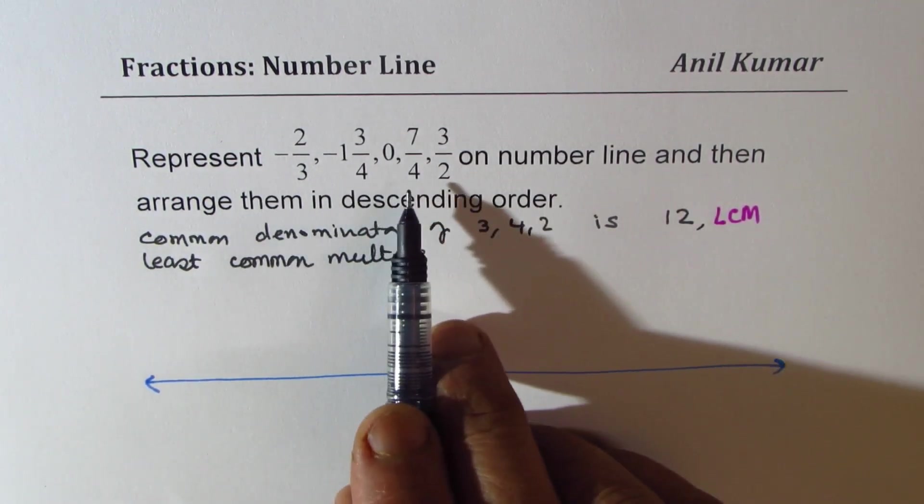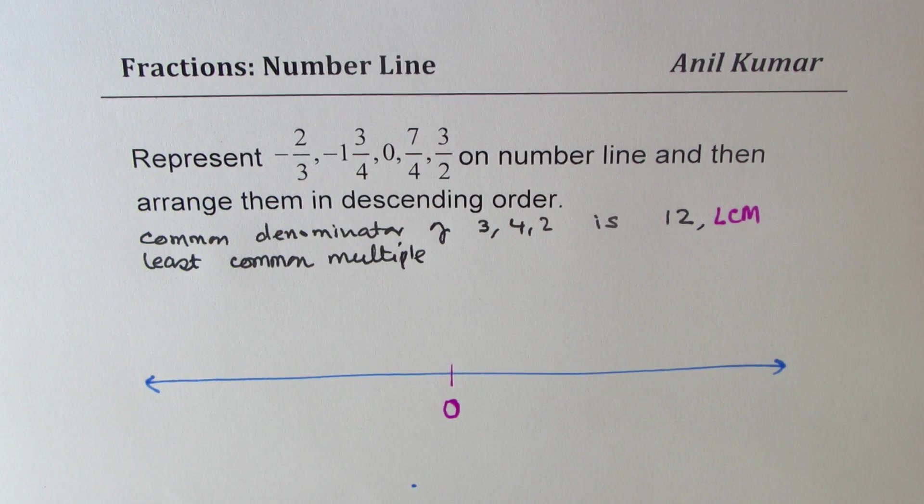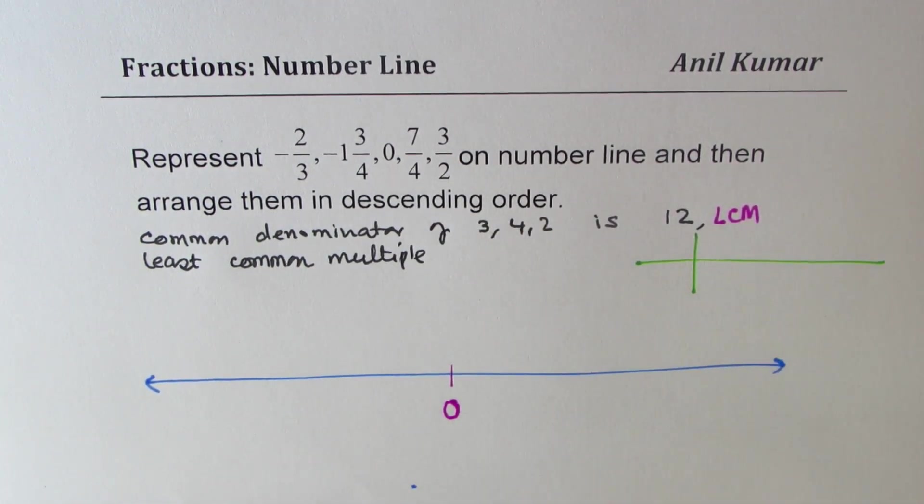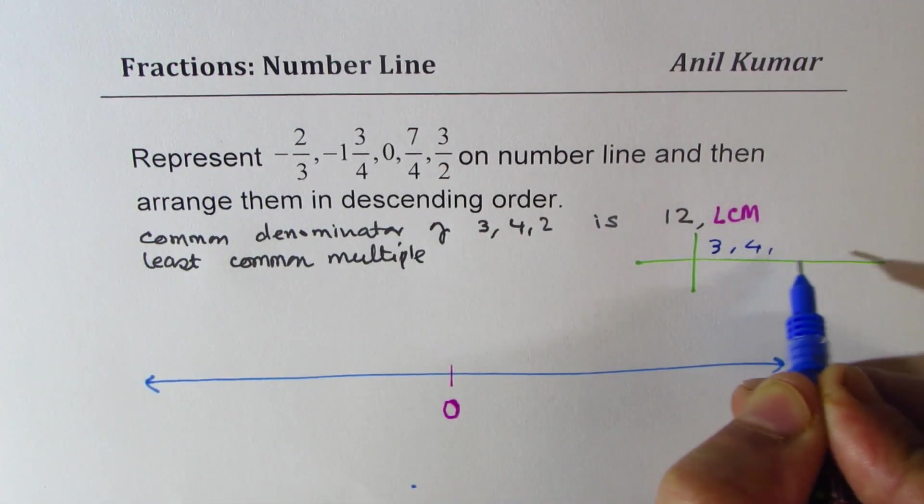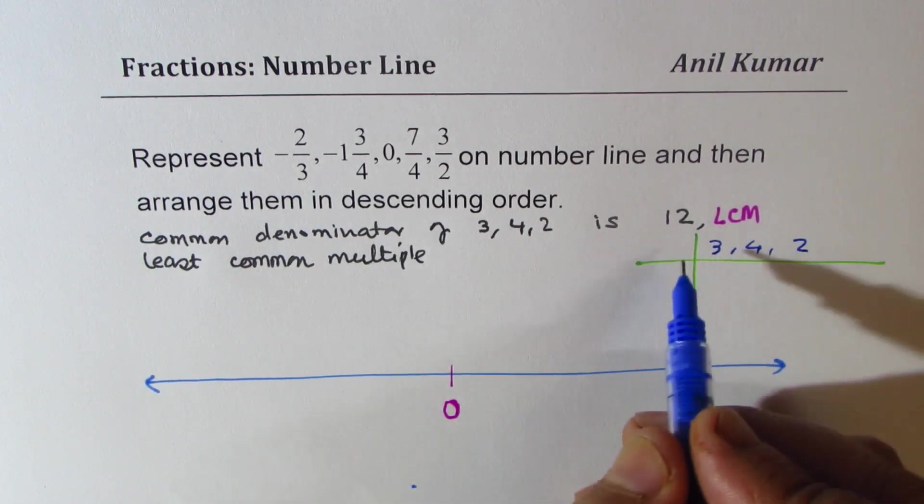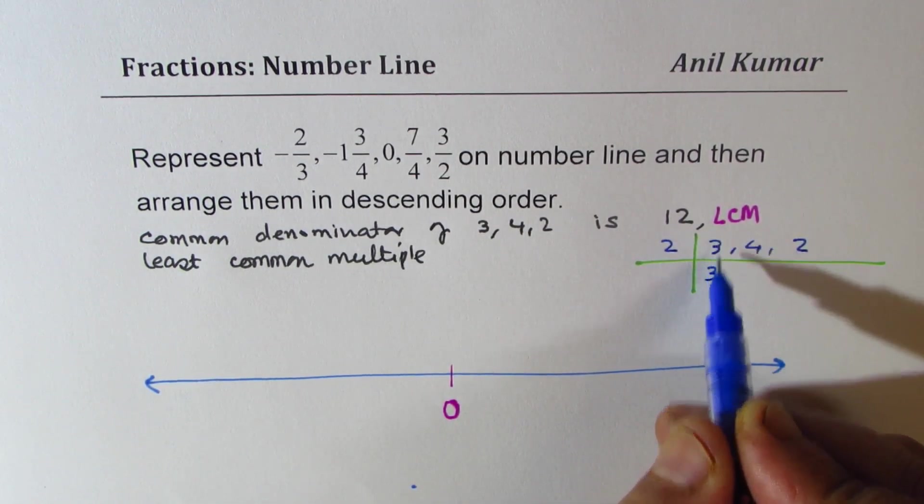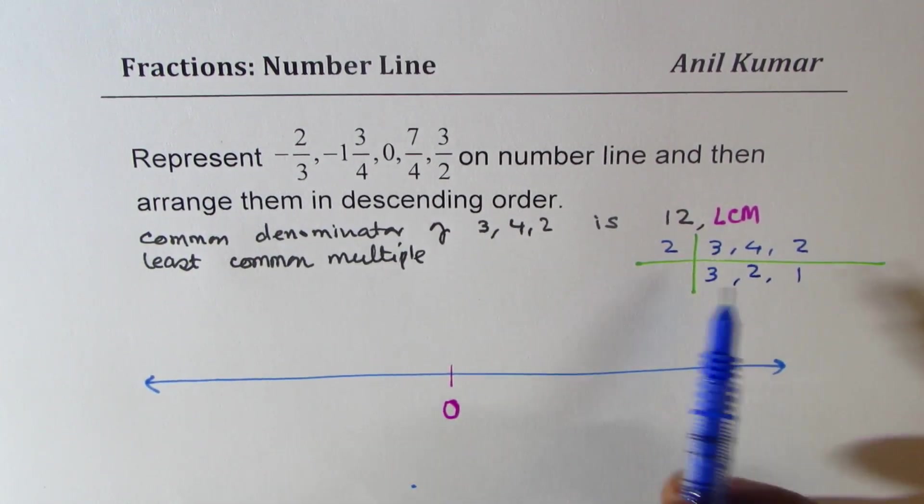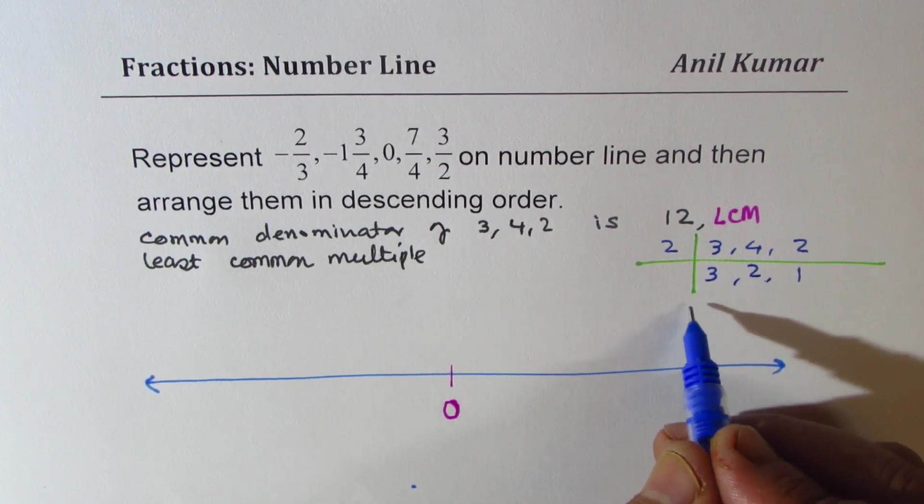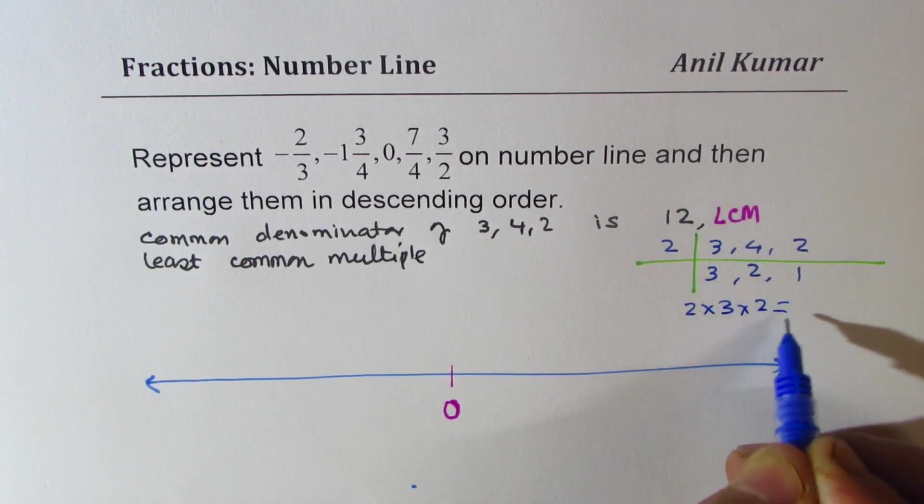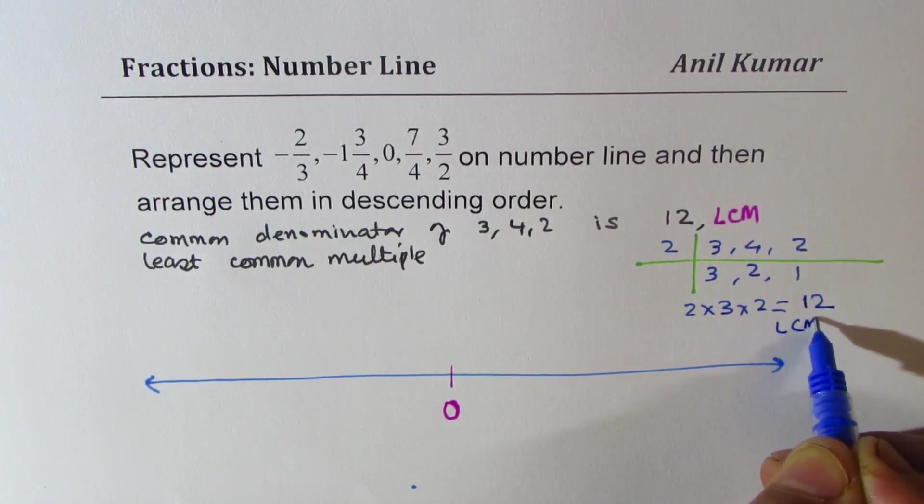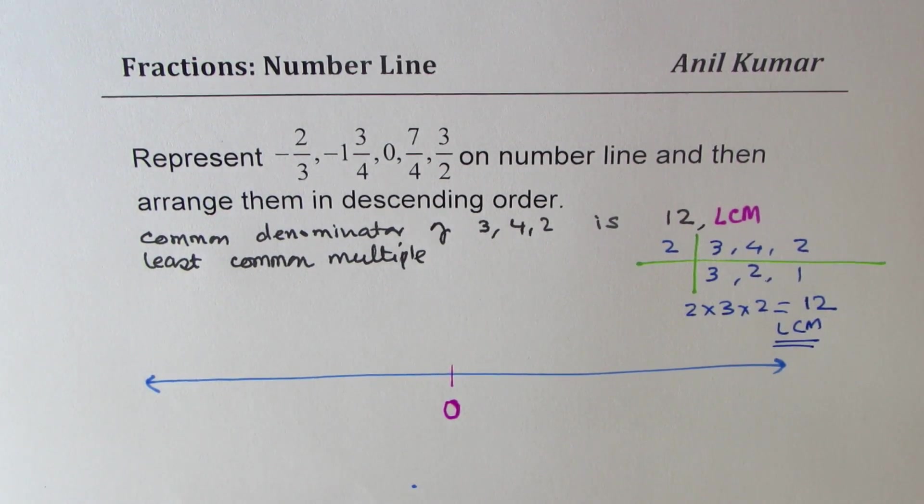A method to do LCM—there are many methods. You can write multiples and then do it, but there is a shortcut method which is kind of like this. You could write the denominators which are 3, 4, and 2 for us. So if I divide by 2, I can't divide 3, so writing it as such. 4 goes 2 times and 2 goes once. Now if I multiply these numbers, that is 2 × 3 × 2 × 2, we get LCM which is 12 for us. So that is how we take out LCM.